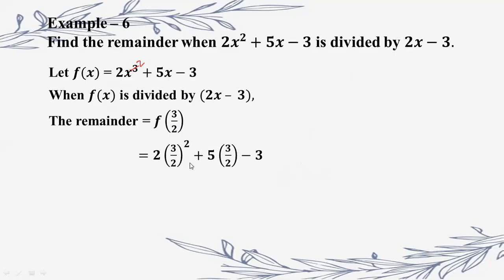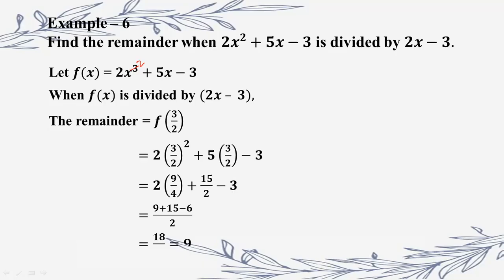We substitute 3 by 2 into the expression. We compute: 2 times (3/2) squared plus 5 times (3/2) minus 3. This gives 18 by 2, and 18 by 2 is equal to 9. This is the remainder.